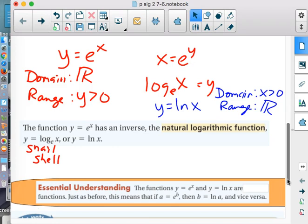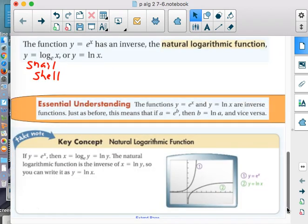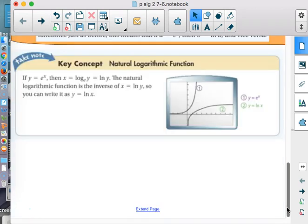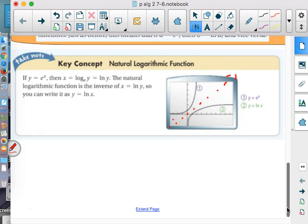Essential understanding. The functions y equals e to the x and y equals ln of x are inverse functions. So everything that exponentials do, logarithmic function does. This means that if a equals e to the b, then b equals the natural log of a and vice versa. We have to be able to snail shell it.